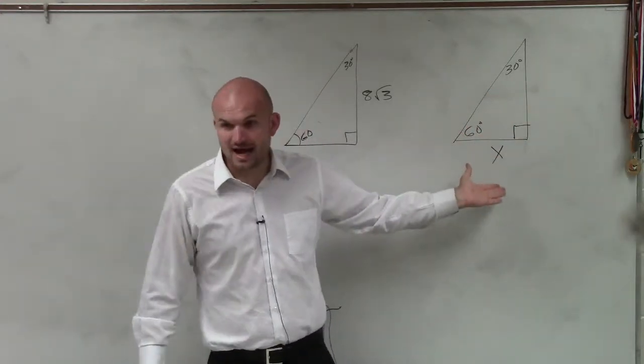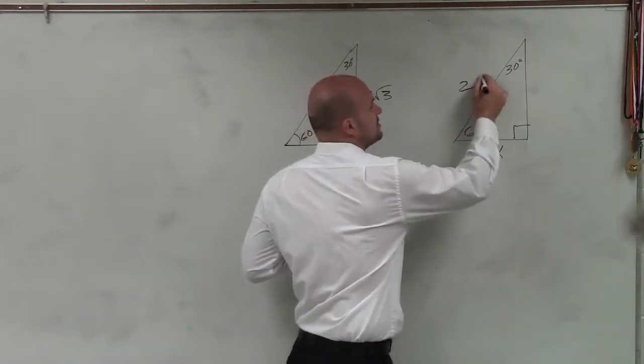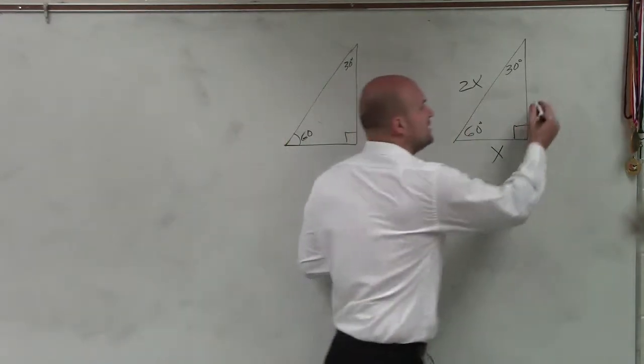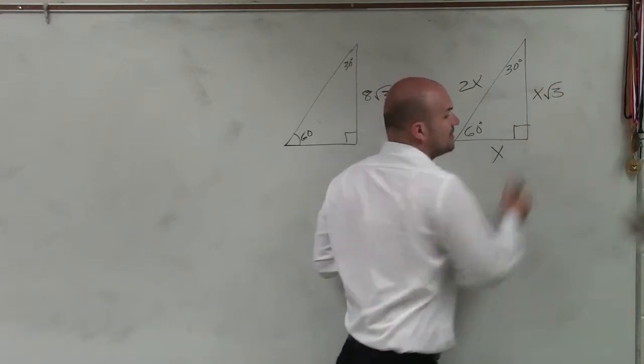If my short leg is x, my hypotenuse is 2x. And if my short leg is x, my long leg is x times the square root of 3.